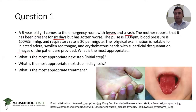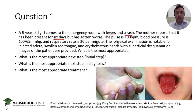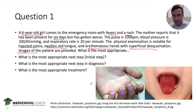For pediatric patients, the vital signs are just not outlandishly toxic — they're just a little bit faster than what you'd consider normal for an adult patient. The physical exam is notable for injected sclera, swollen red tongue, and erythematous hands with superficial desquamation. Now let's look at the images. We see the hand as the vignette described, with erythematous confluent patches, and we see desquamation at the fingertips.